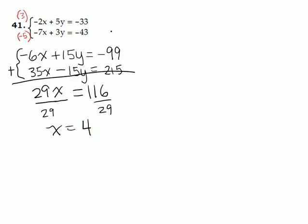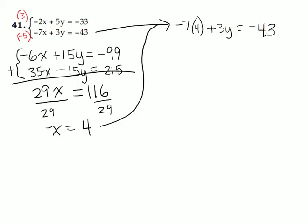Now we need to go back up to one of the original equations. Replace x with 4 to see what y is going to turn out to be. And I think I'm just going to arbitrarily choose the second equation because really both of them look about the same amount of difficulty. So let's replace x with 4 and see what happens. So we'll take negative 7 times 4 plus 3 times y is equal to negative 43.